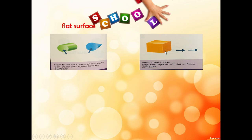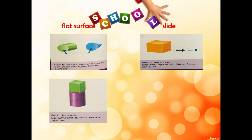Next one is slide. When we say slide, this figure — if we move it to the other side, you can easily slide it. Again, what word is that? Yes, it is a slide. Next one is stack. When we say stack, we can put a solid figure above the other one. For example, this cube can stack, as well as the cylinder. Why? Because it has a flat surface. Again, what word is this? Stack.